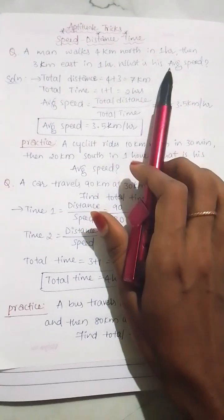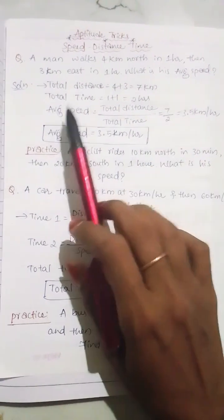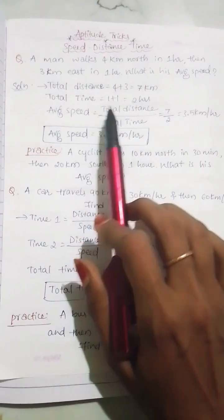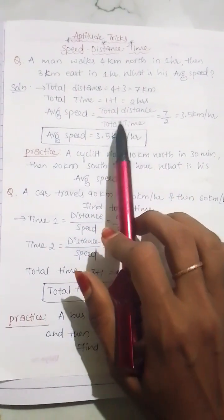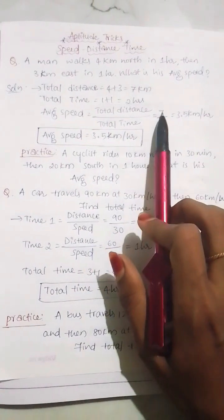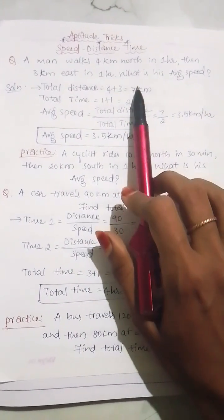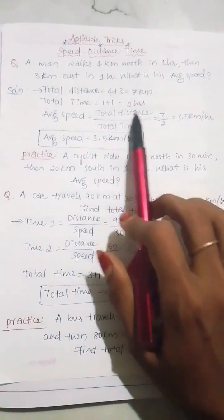Then we have to calculate the average speed. We have a formula here: average speed is equal to total distance divided by total time. Here the total distance is 7 km and total time is 2 hours.